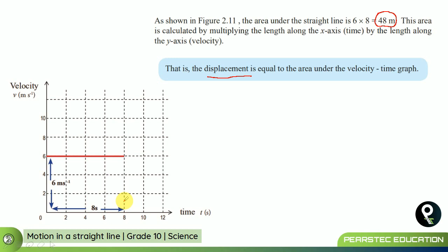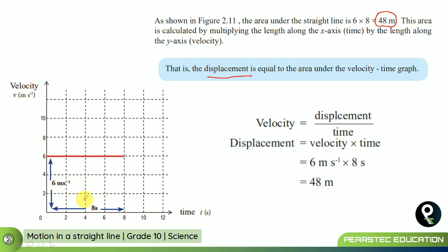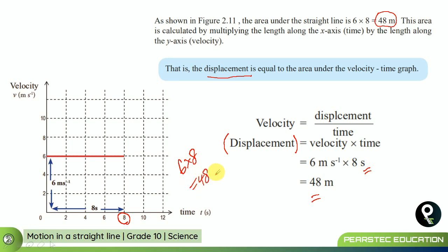We can verify this using the equation: velocity equals displacement divided by time. So displacement equals velocity multiplied by time, which is six multiplied by eight, giving 48 meters. We can find displacement easily by plotting the graph and calculating the area — six multiplied by eight equals 48.